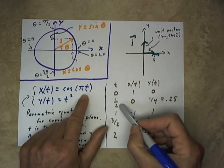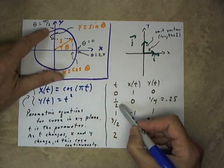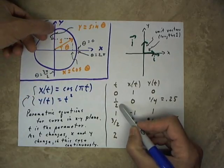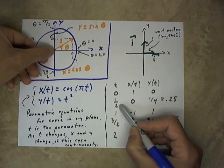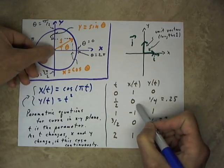If you go to 1 half, then you have the cosine of pi times 1 half. Well, pi times 1 half is pi over 2. And the cosine of pi over 2, if we take this point and project it down to the x-axis, we see that the cosine is 0, so x of t will be 0.